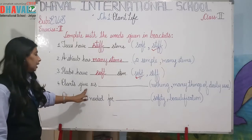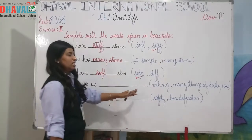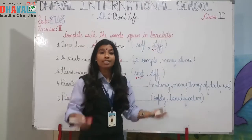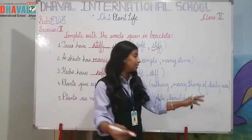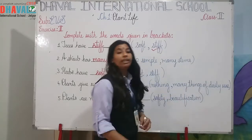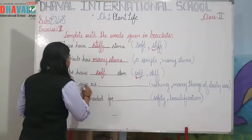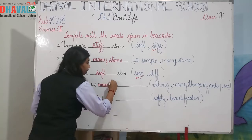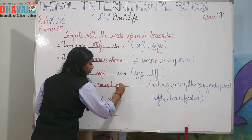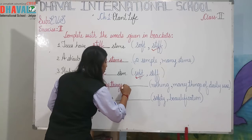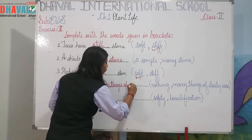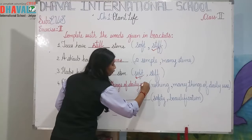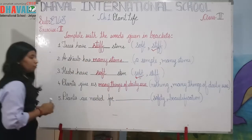Fourth one: plants give us dash — nothing or many things of daily use? Of course, plants give us many things. So the answer is: plants give us many things of daily use.